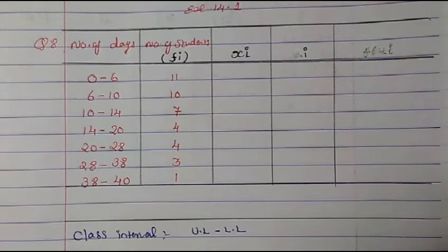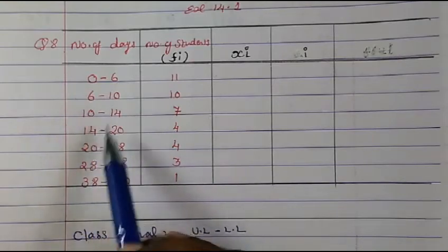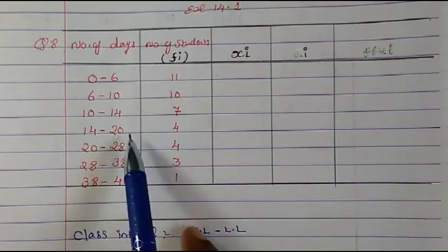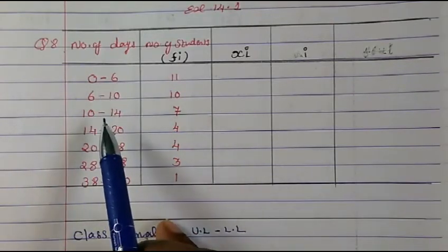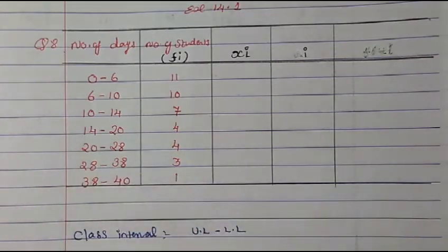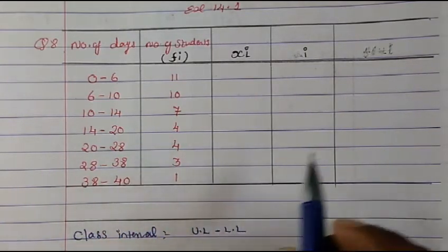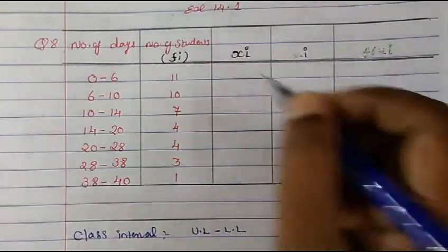Whenever you are asked to find the mean, first check whether the class intervals are the same. Here, continuation is present (0 to 6, 6 to 10, 10 to 14, 14 to 20), but the class intervals are different. So we cannot use the step deviation method, and therefore in this sum we will use the direct method.